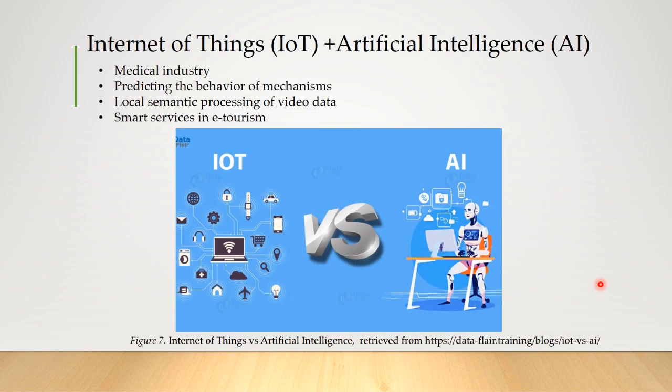Intelligent IoT devices should be able to process the incoming information without sending it to the cloud. Smart objects equipped with their own AI capabilities spend significantly less time on the analysis of incoming data and development of a final solution, creating new possibilities, for example, in the development of ambient intelligence in the medical industry, predicting the behavior of mechanisms, local semantic processing of video data, and smart service in electronic tourism.